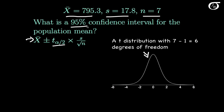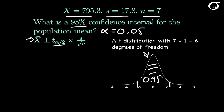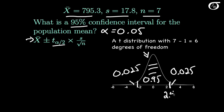We want a 95% confidence level, which means the alpha level is 0.05. We put 95% of the area in the middle of the distribution, and the remaining 0.05 is split evenly into the two tails — an area of 0.025 in each tail. Going to software or a t table, we find that value is 2.447. In notation, we call that t sub 0.025 — the t value with an area of 0.025 to the right.